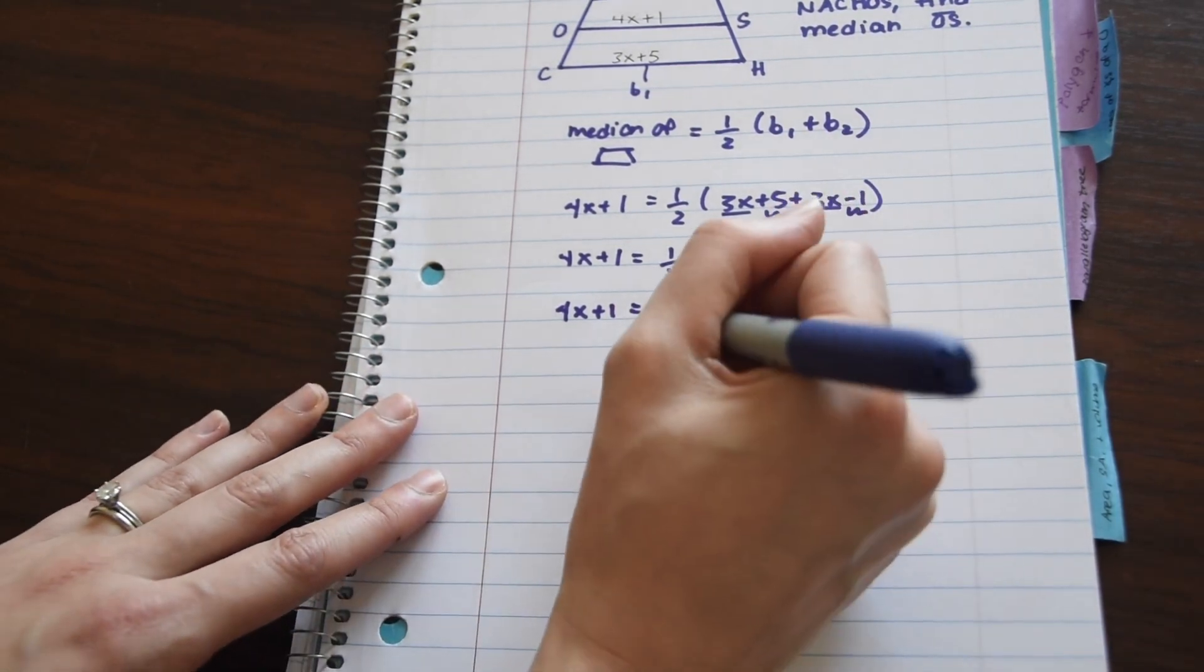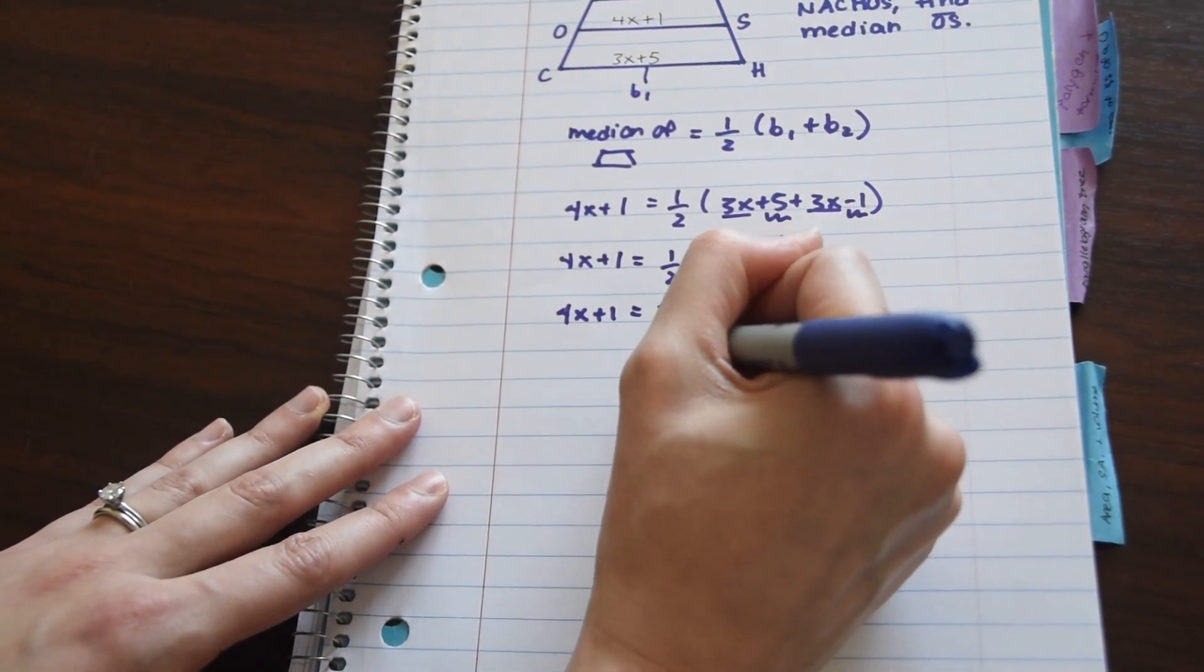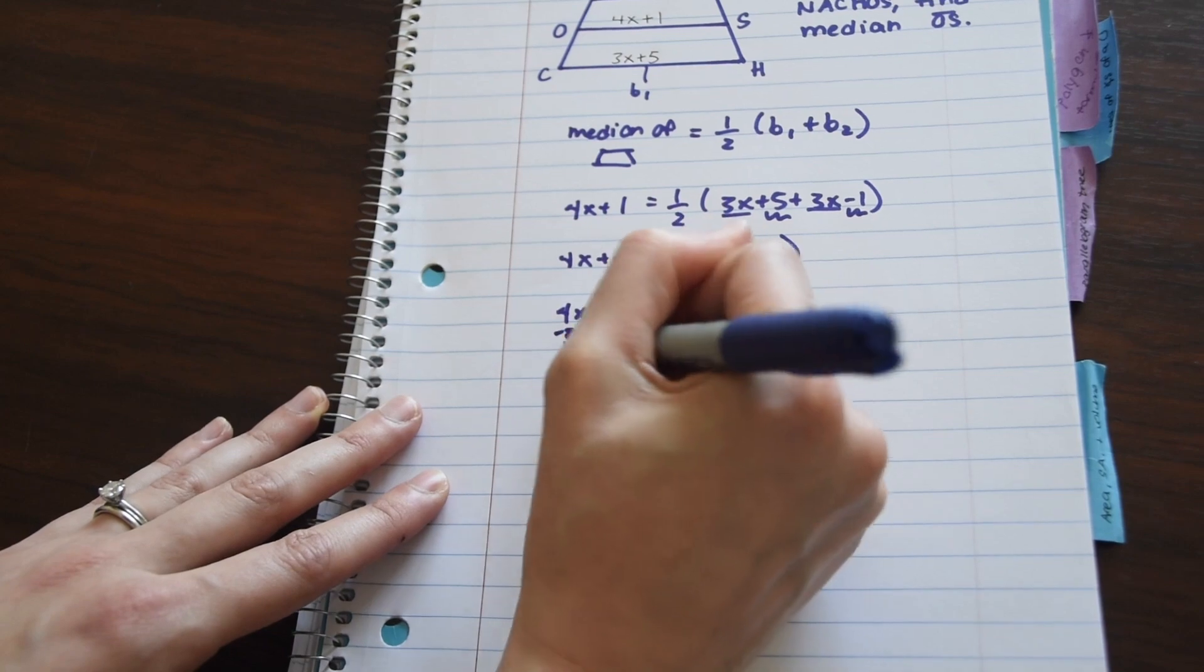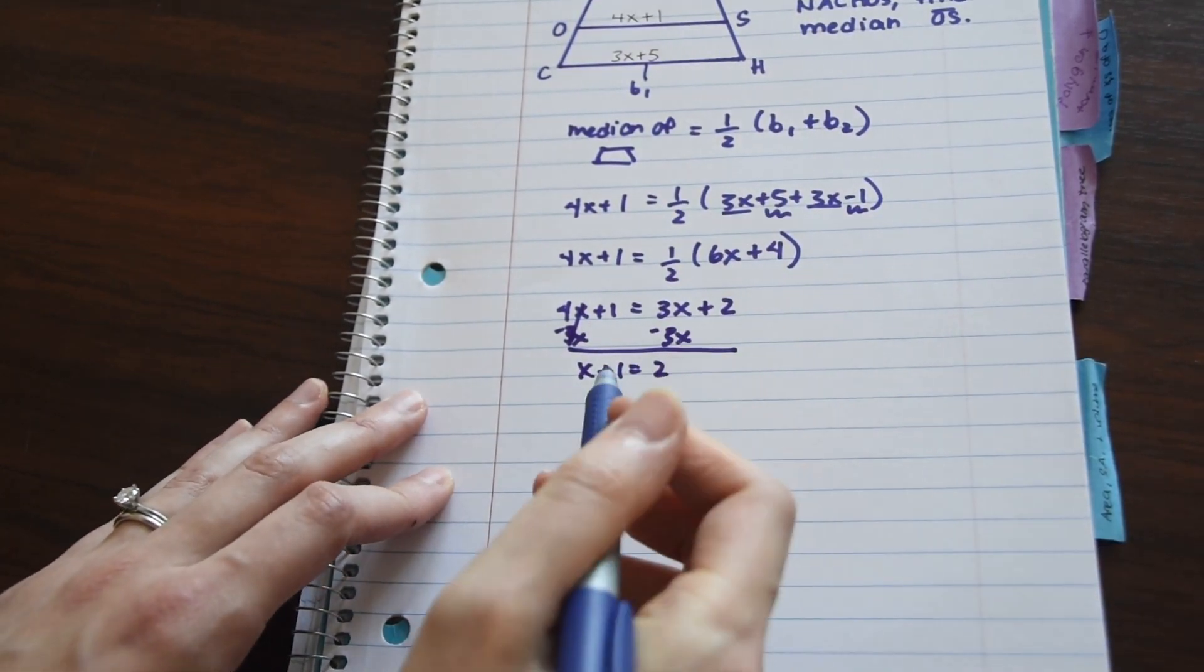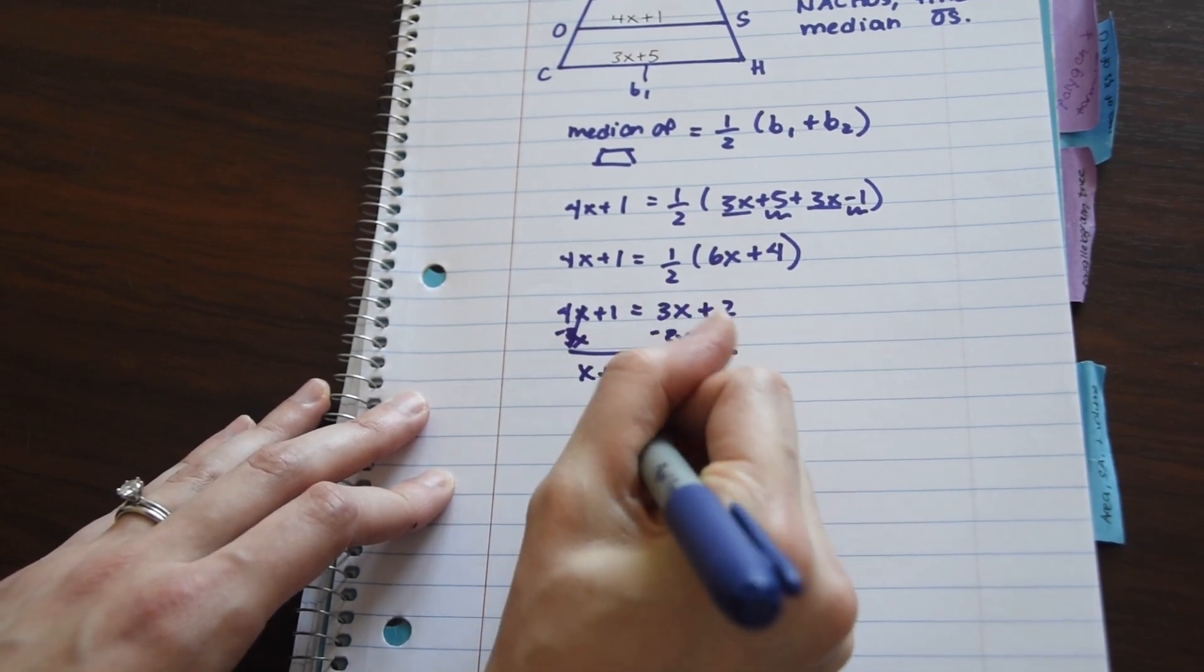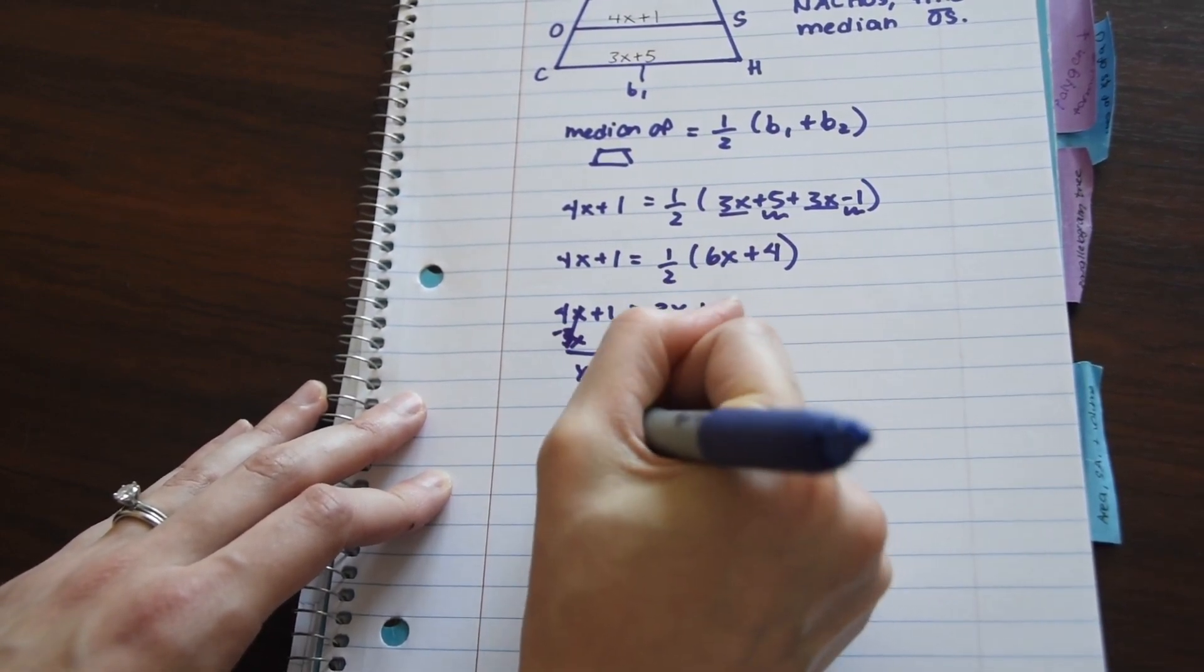So now really nice and simple, we're just going to be subtracting 3X from both sides. Our goal is to get X alone, so we have X plus 1 equals 2, and now we're really close to having X alone just subtract 1 from both sides, and we have X equals 1.